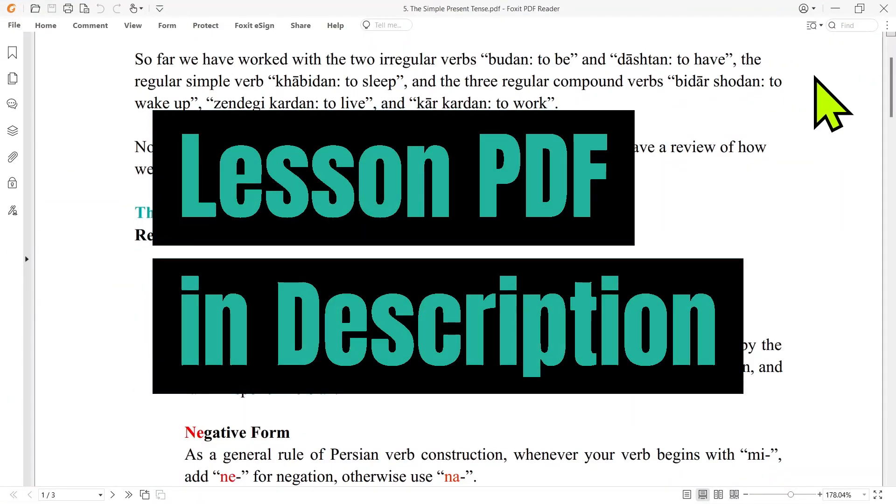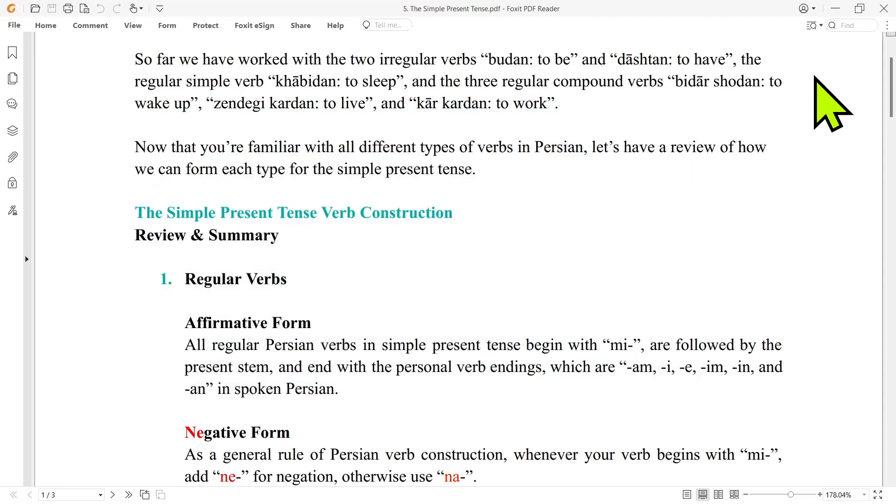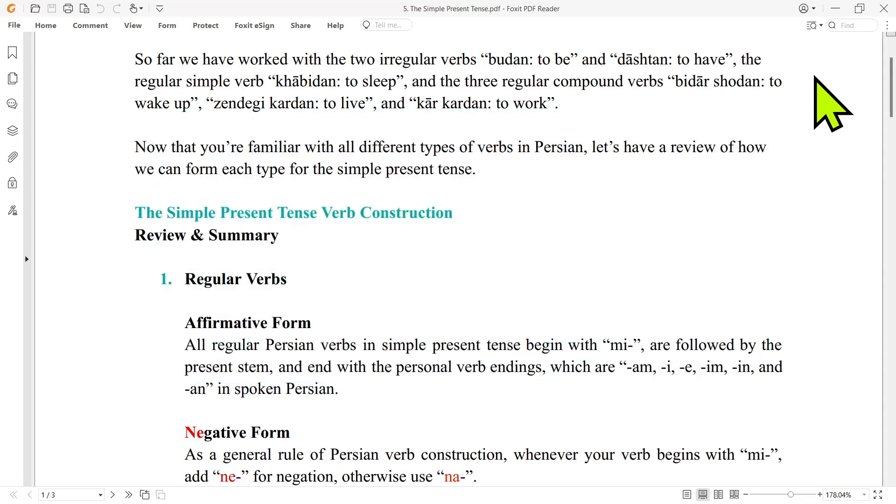So far we have worked with the two irregular verbs Budan and Dashtan, the regular simple verb Khabidan, and the three regular compound verbs: Bidar Shodan, Zendegi Kardan, and Kar Kardan.